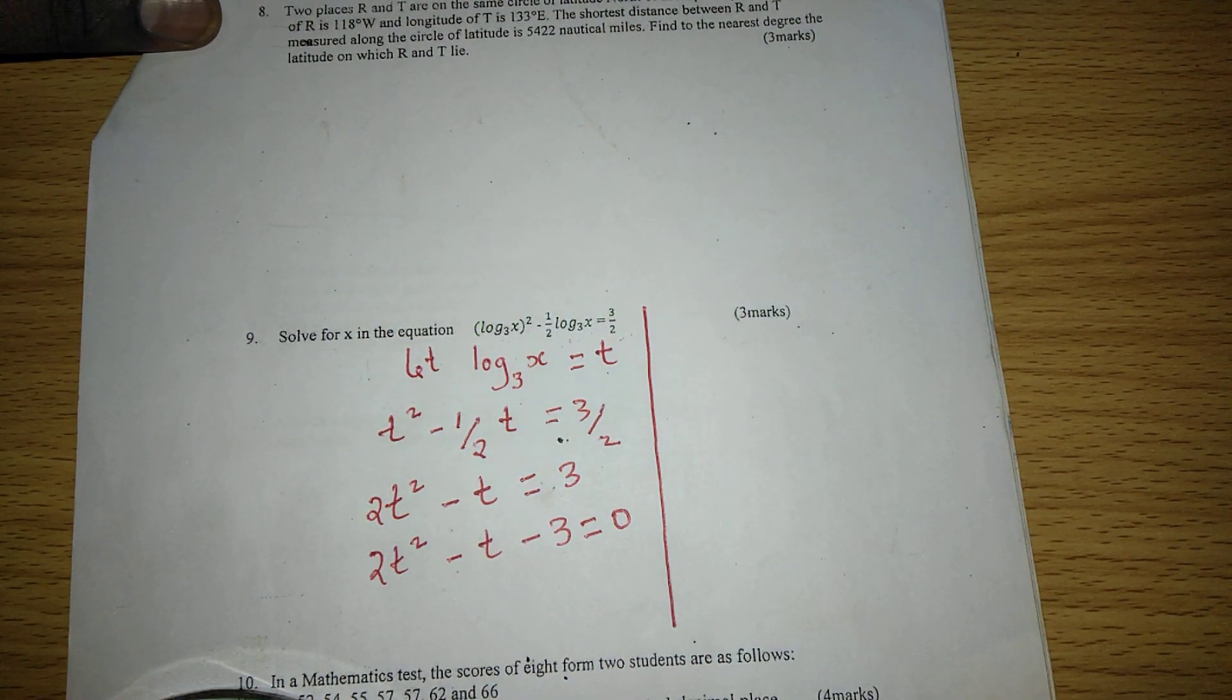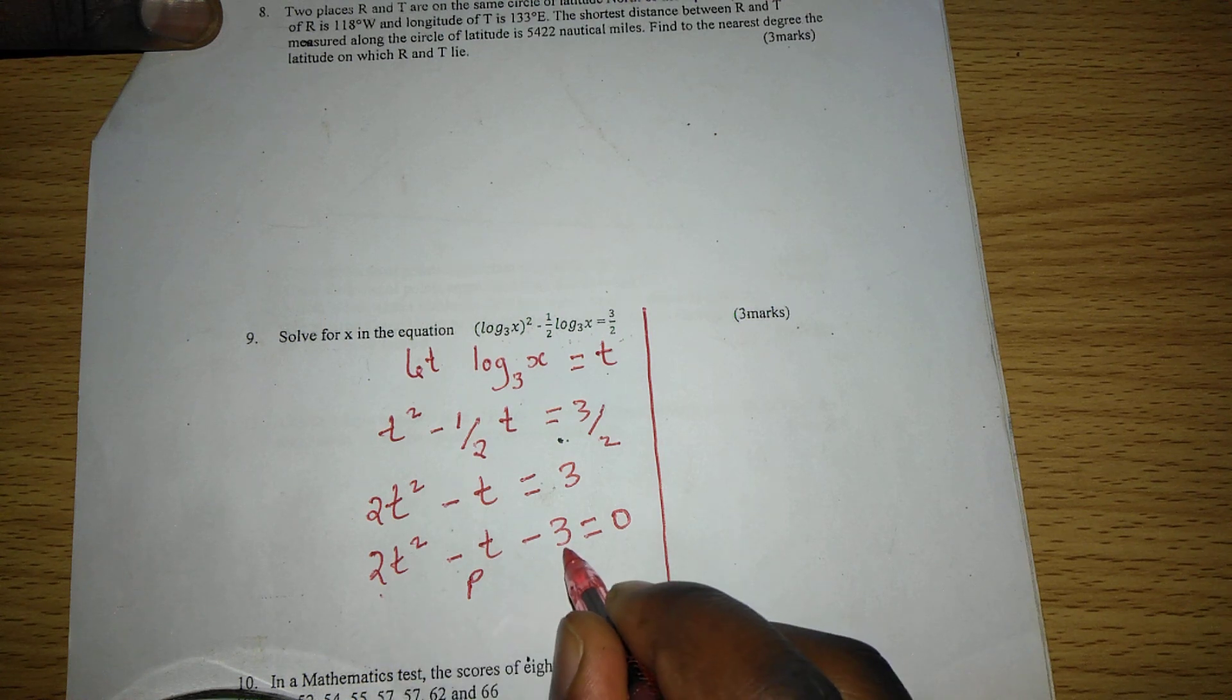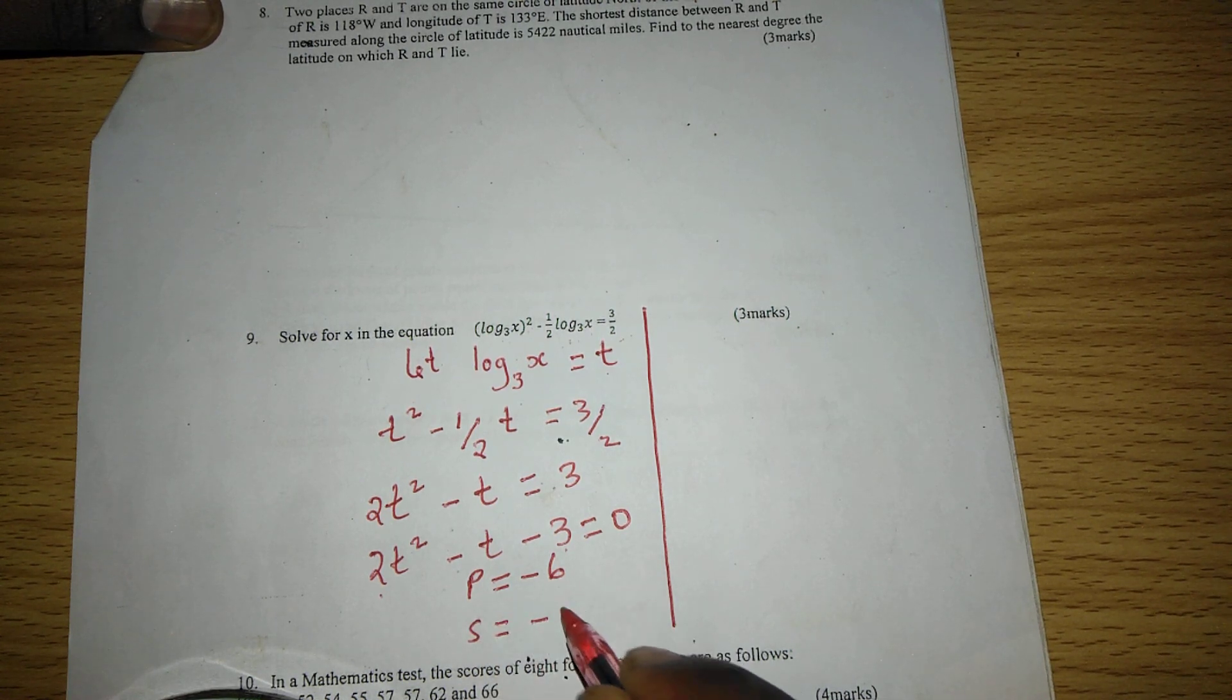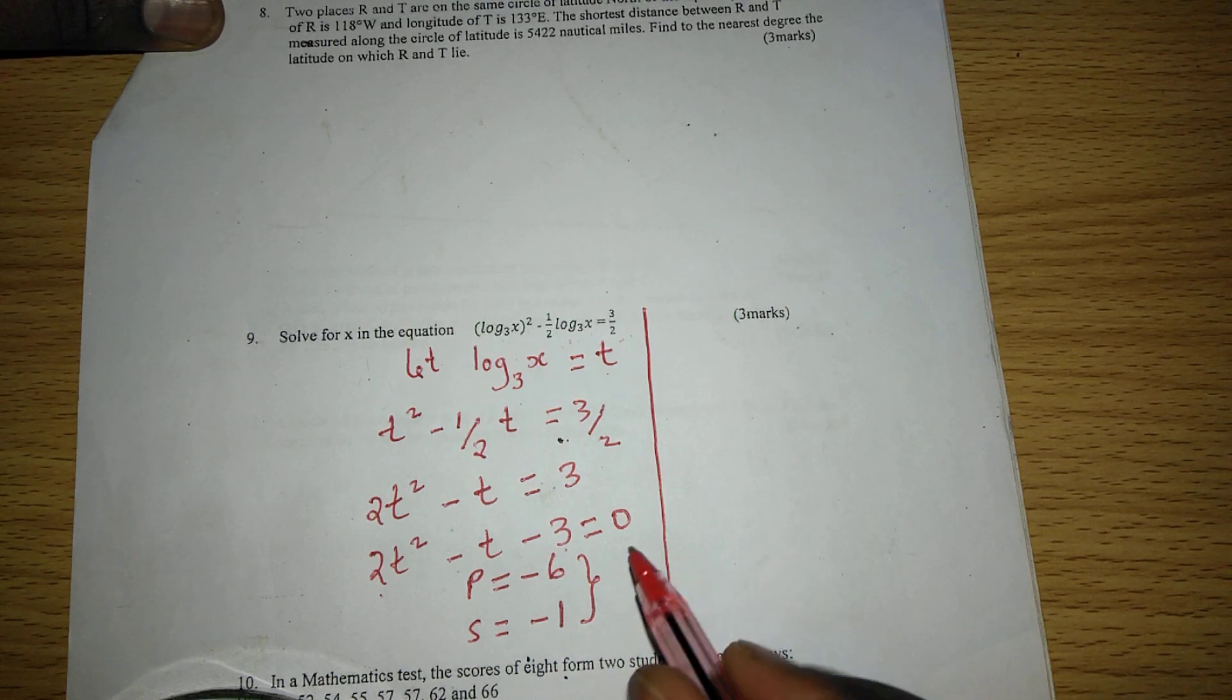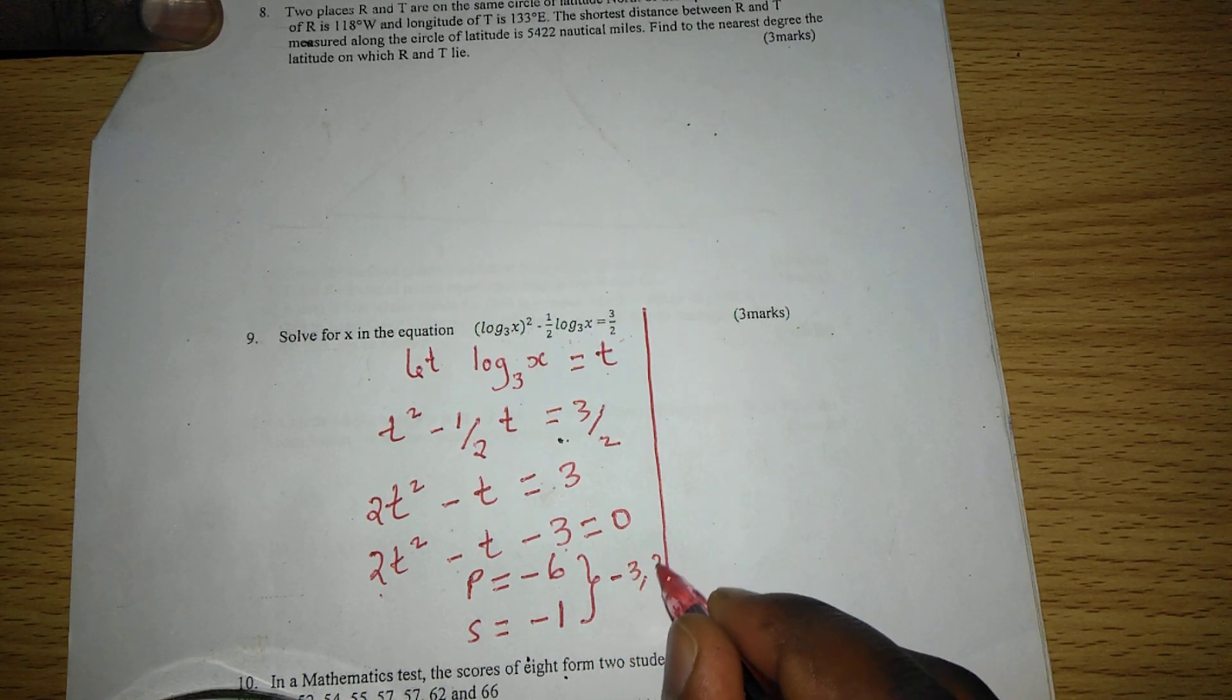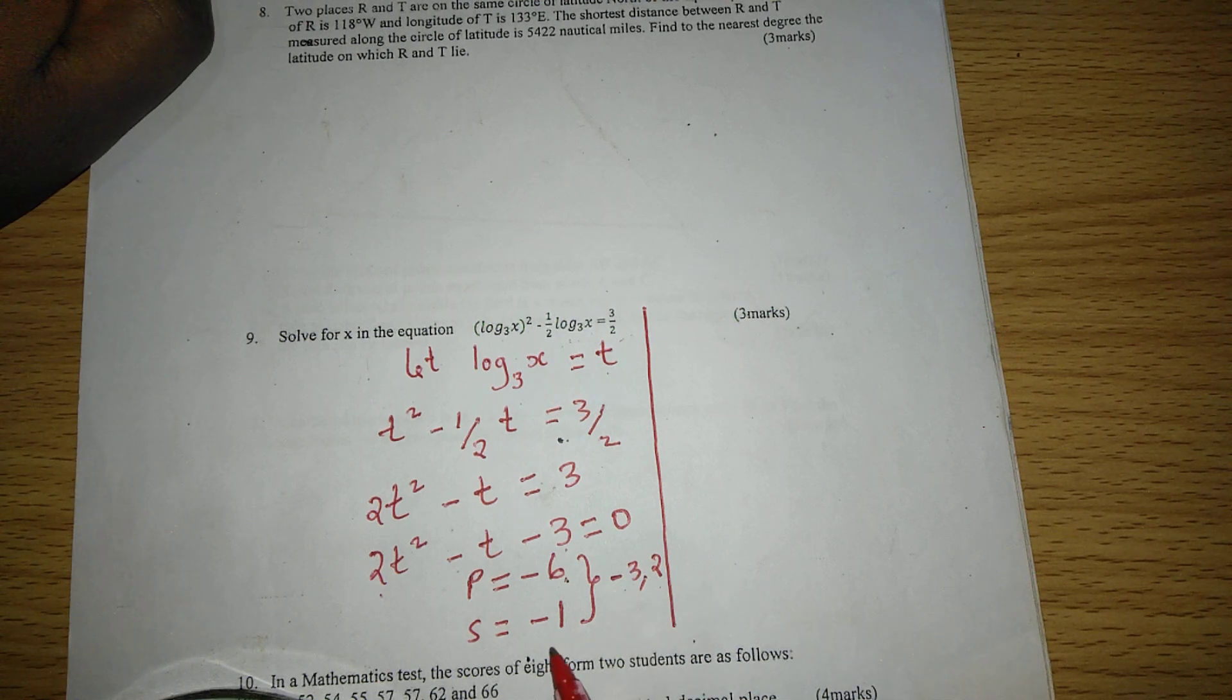I choose to solve this using the factorization method, whereby we are going to get two factors whose product is 2 times negative 3, that is negative 6, and whose sum is negative 1. These two roots, such that when multiplied we get negative 6 and when added we get negative 1, are negative 3 and positive 2.